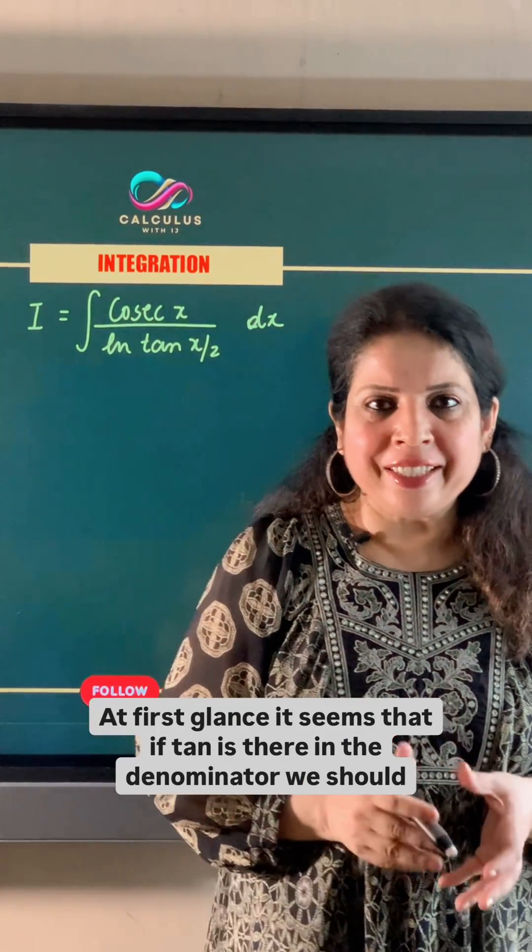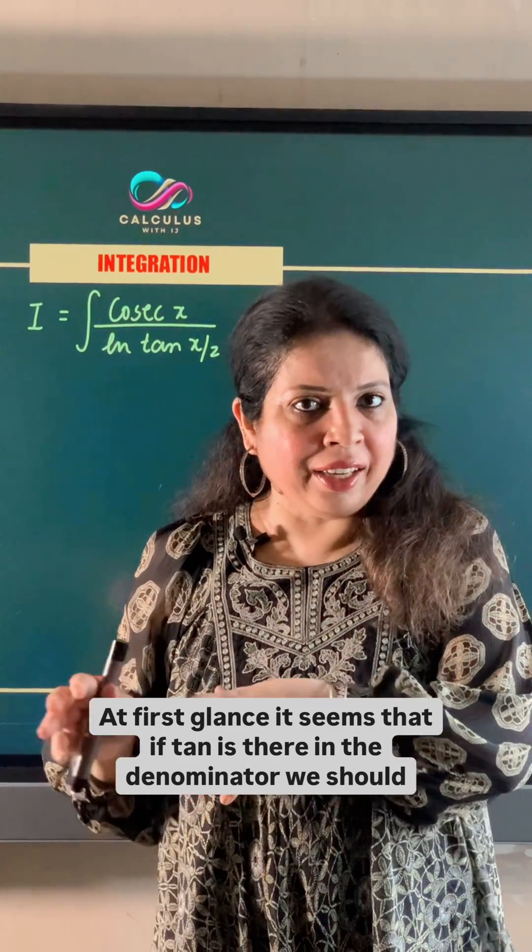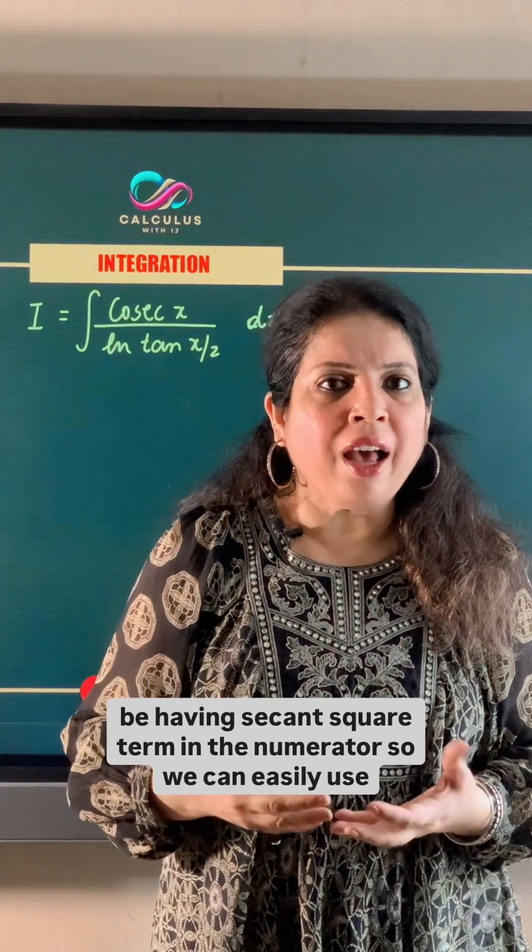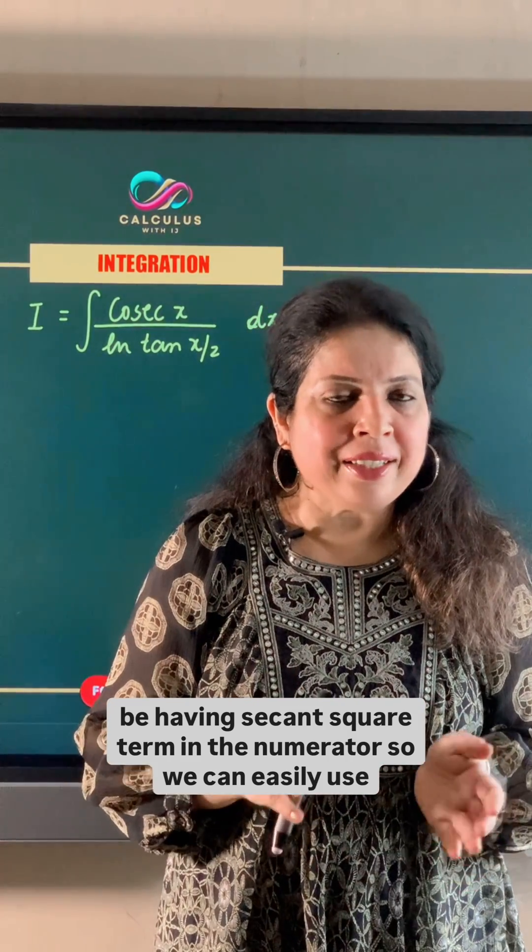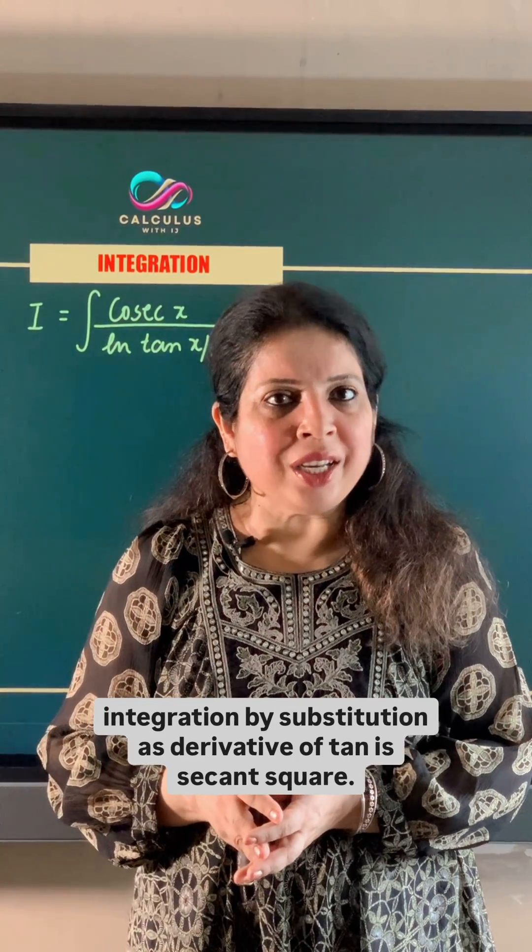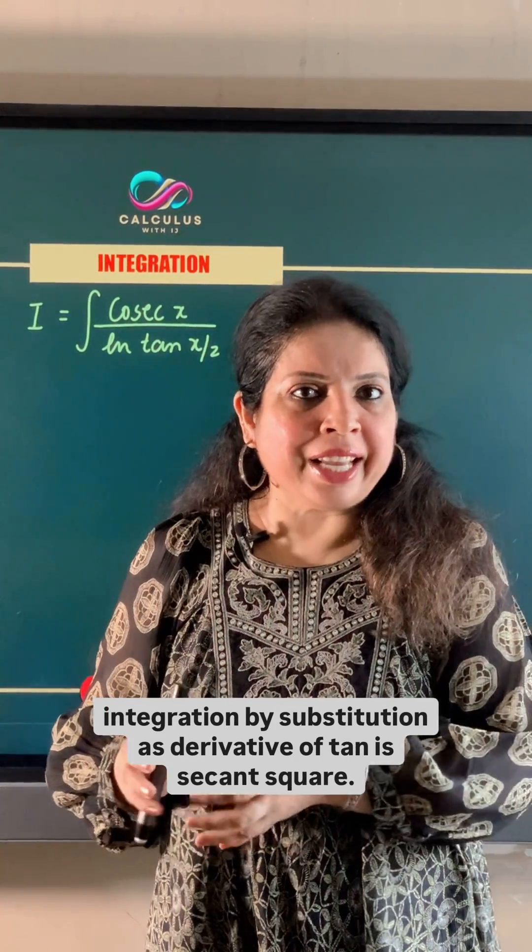At first glance, it seems that if tan is there in the denominator, we should be having secant square term in the numerator. We can easily use integration by substitution as derivative of tan is secant square.